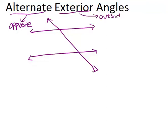In this picture, this green angle would be an alternate exterior angle with this green angle. Similarly, this red angle would be an alternate exterior angle with this red angle. Notice that in each case the angles are on opposite sides of the transversal and on the outside of the parallel lines.